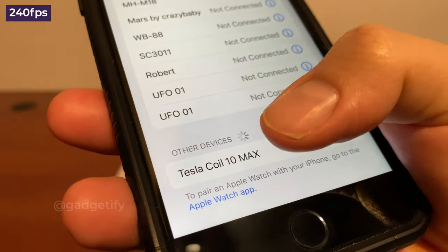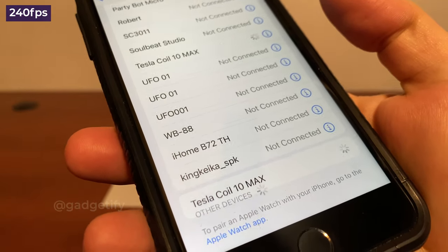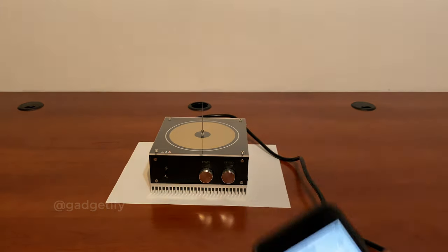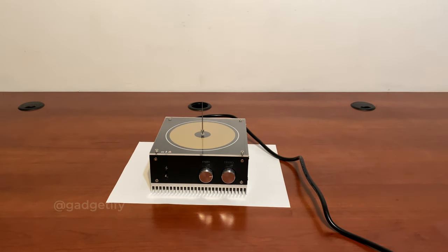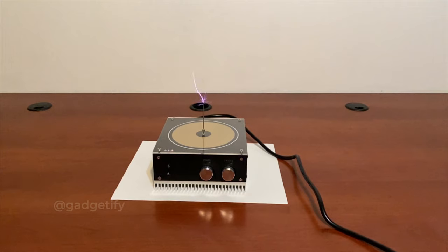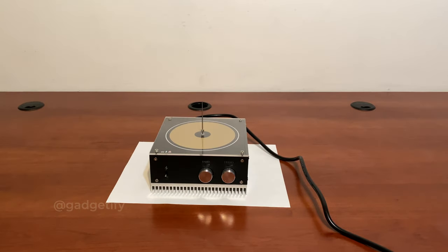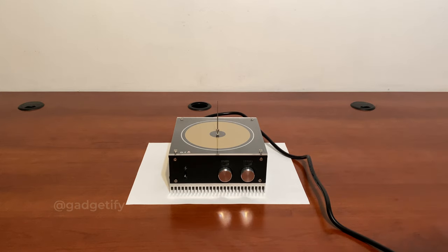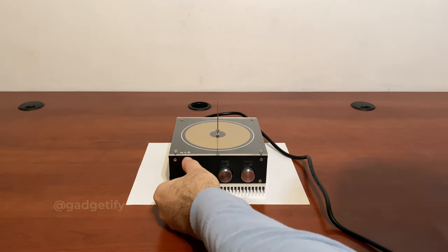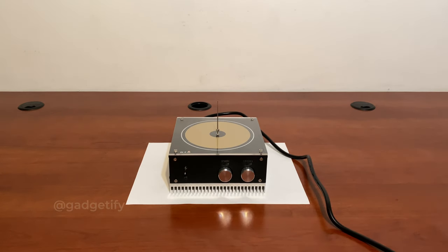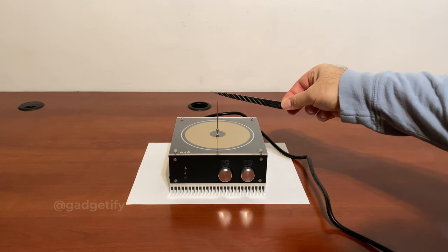Music mode, you can see it's Tesla coil 10 max. It's not connected. Now I have to find a square wave music for it to play. You can see you need a square wave music and when you're done, you just move back and you can play around with this.